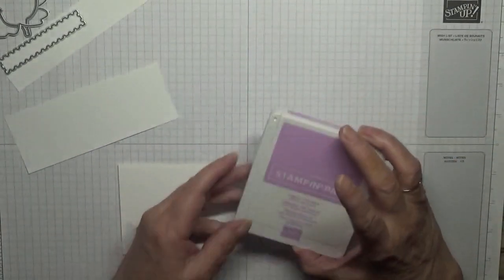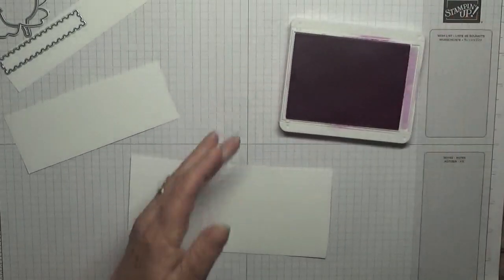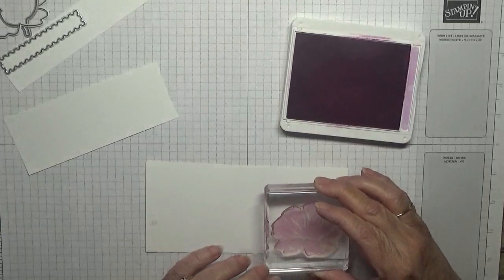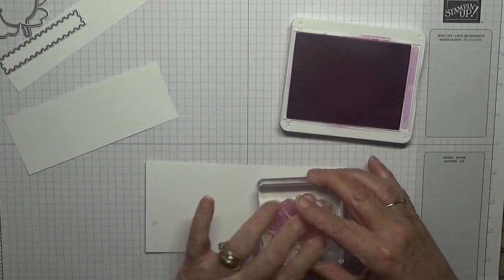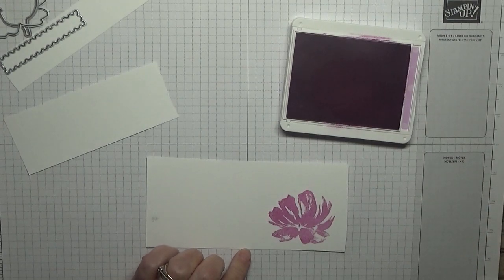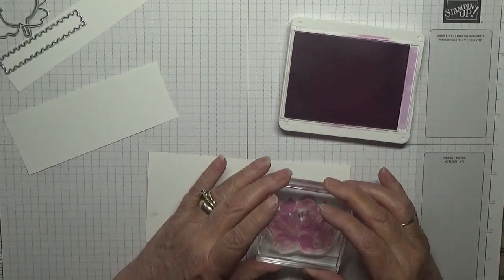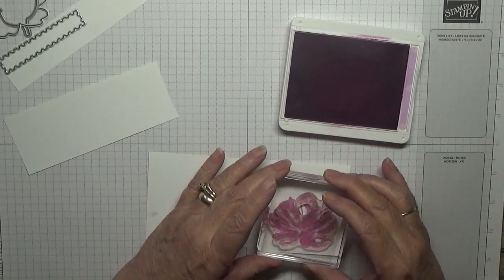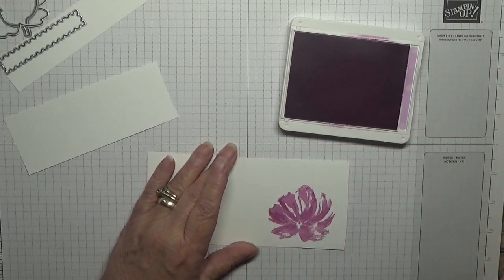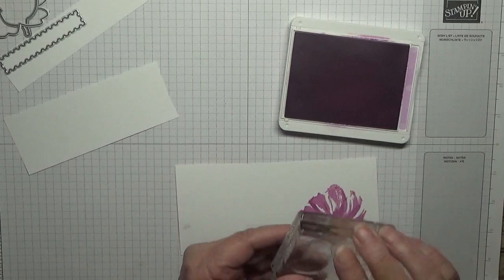I am going to stamp it in Fresh Freesia. I don't know what it'll come out because I've never used this ink on this flower. So we'll put the first layer down. It's going to be quite bright I think. Maybe I should have stamped off, I don't know. Let's see and then we'll put the second layer down.